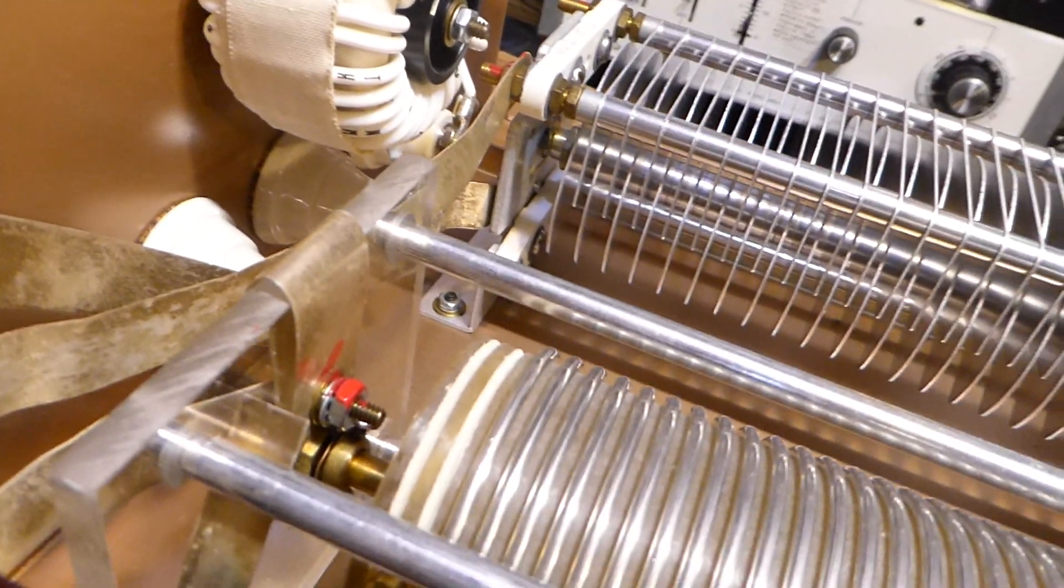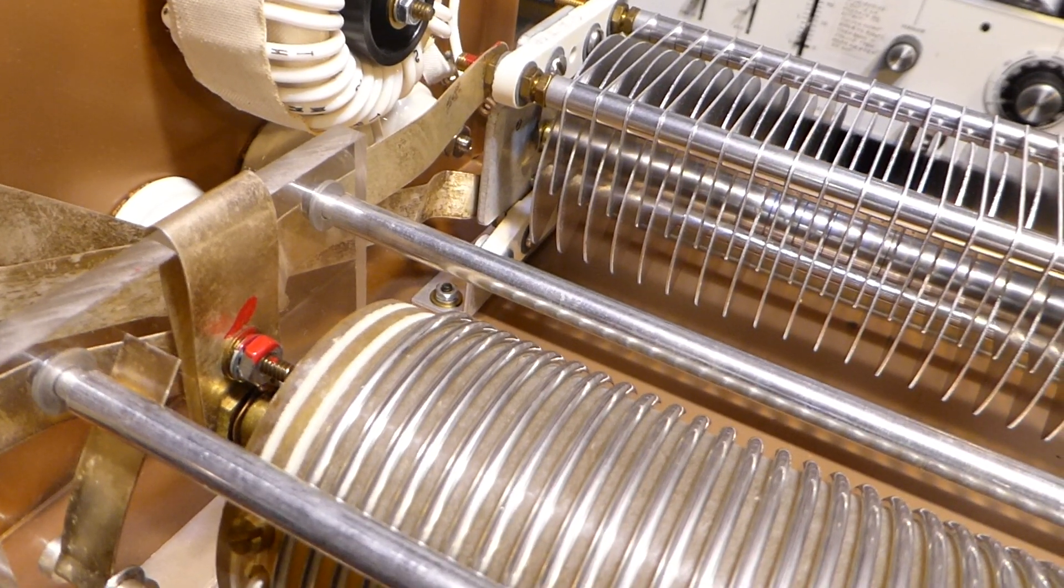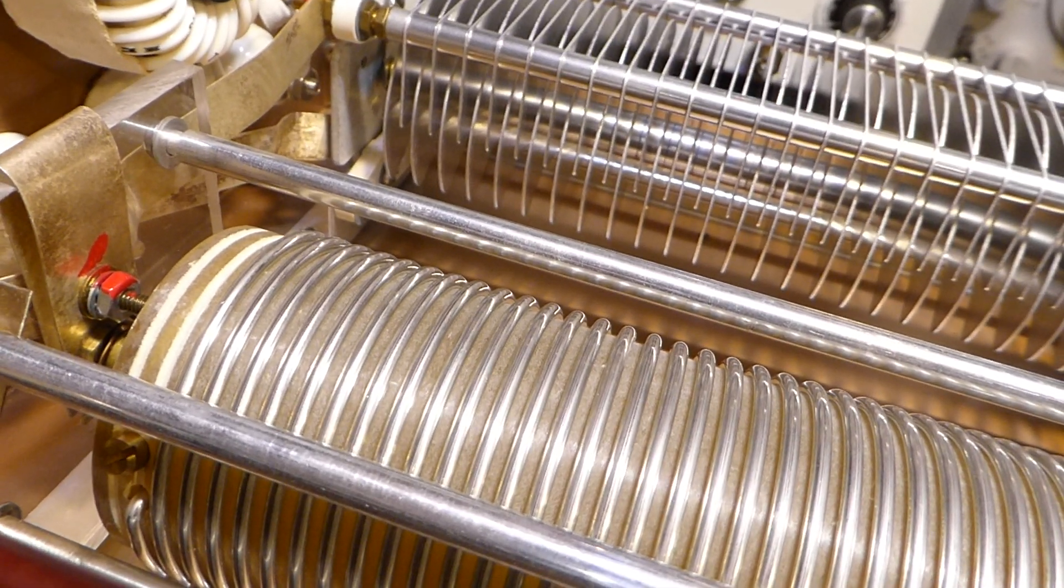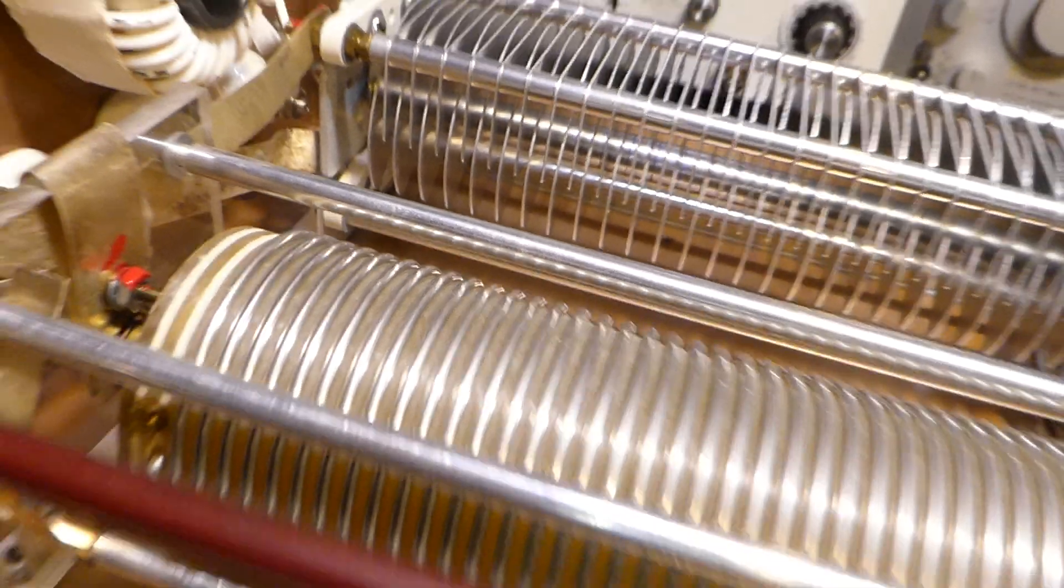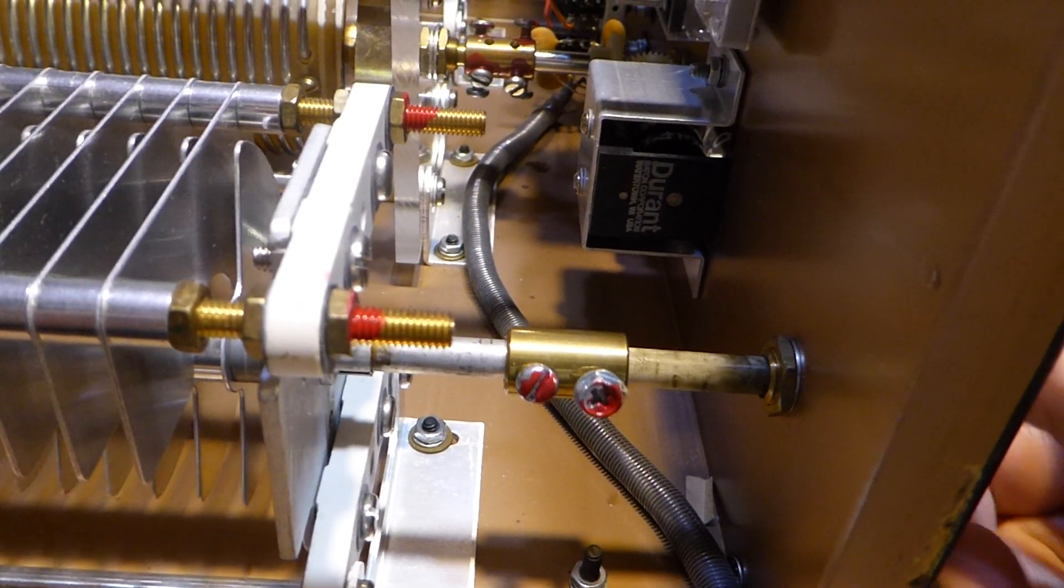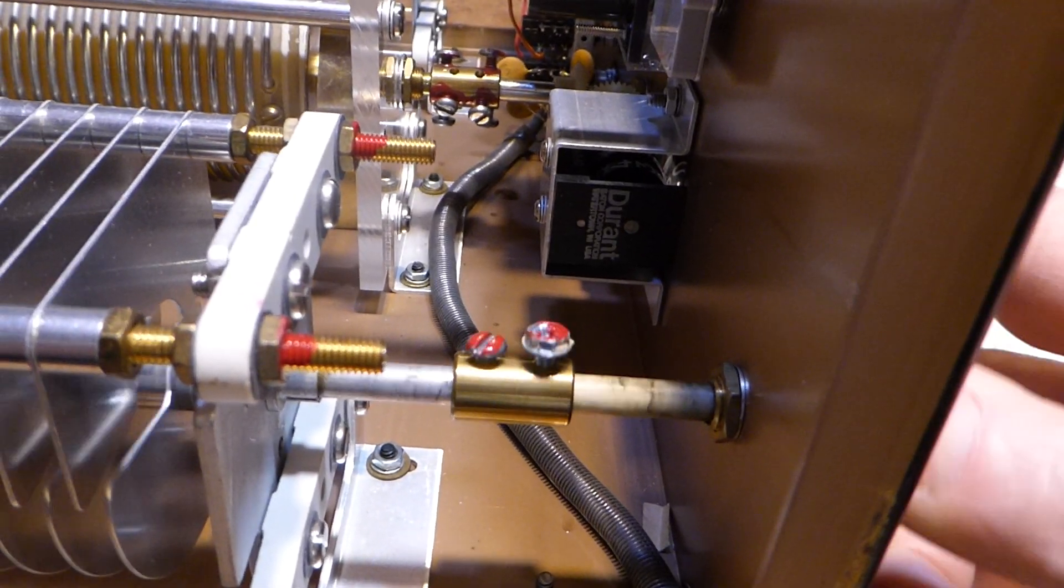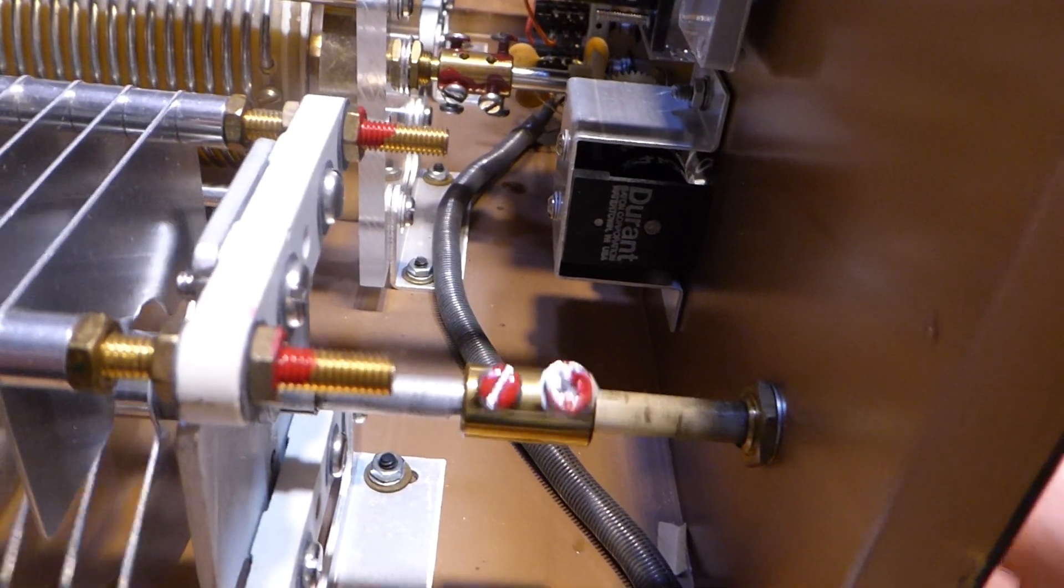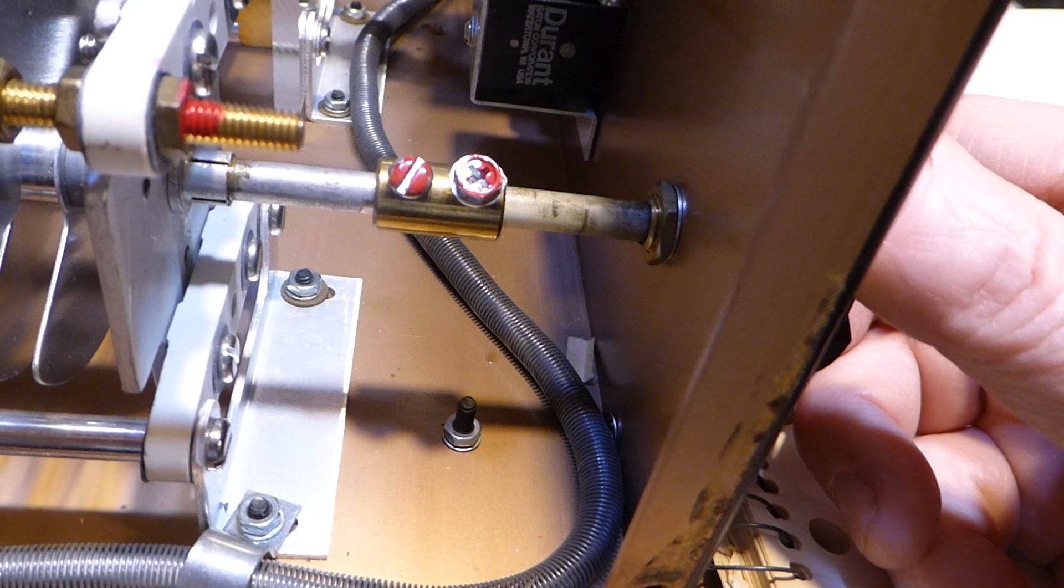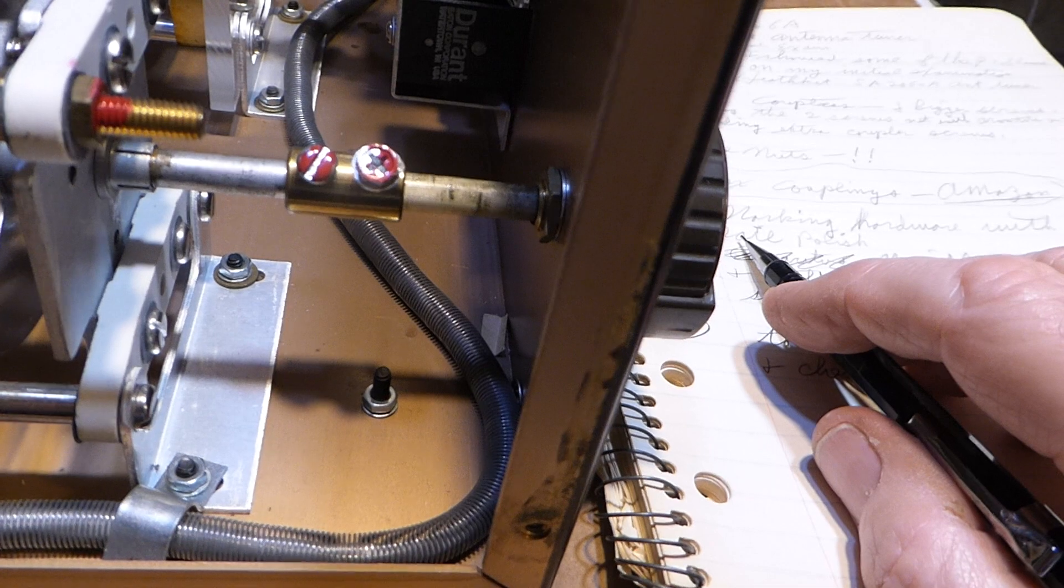You can see this is coming along pretty good. These knobs on here turn pretty tight when you rotate these capacitors. The roller inductor lines up better and is not quite so hard to turn, but the capacitors are. So I got to looking on eBay and other places for shaft couplings, flexible shaft couplings.